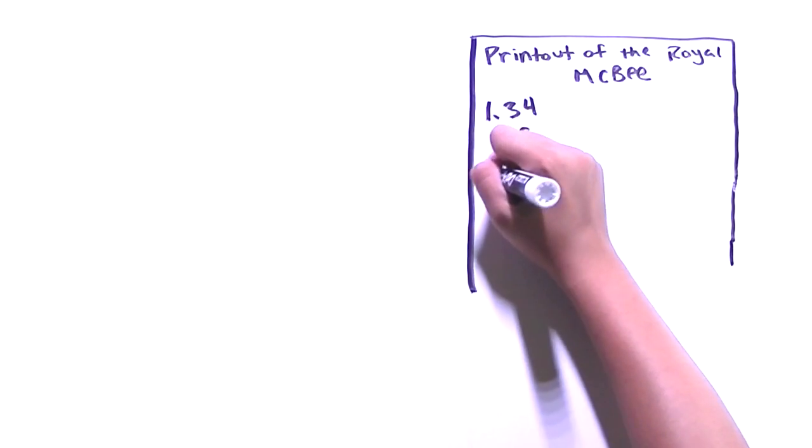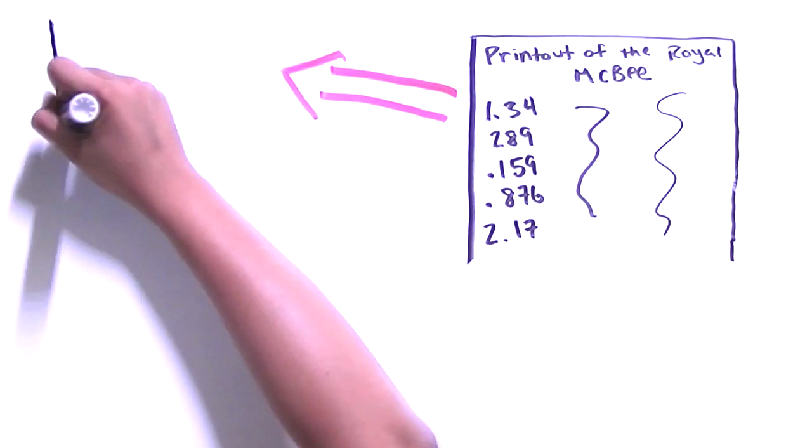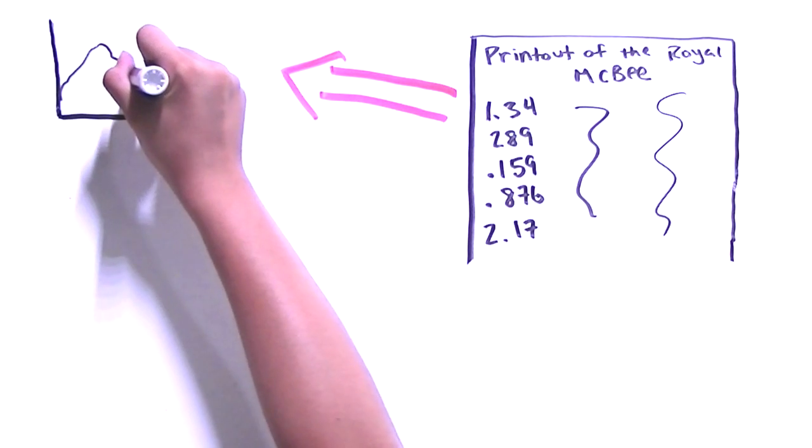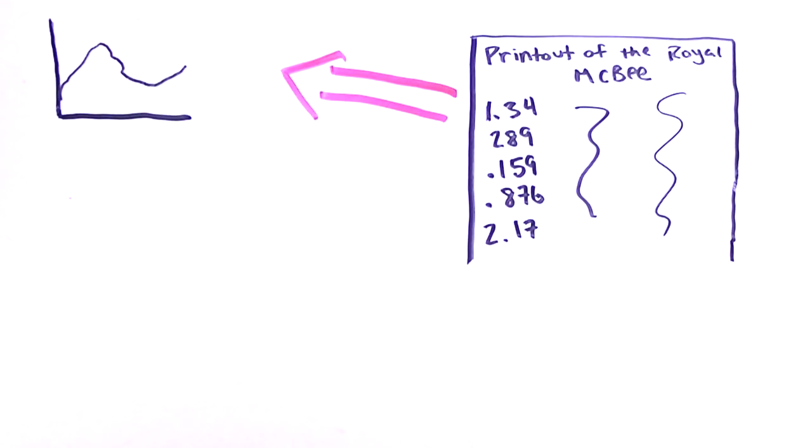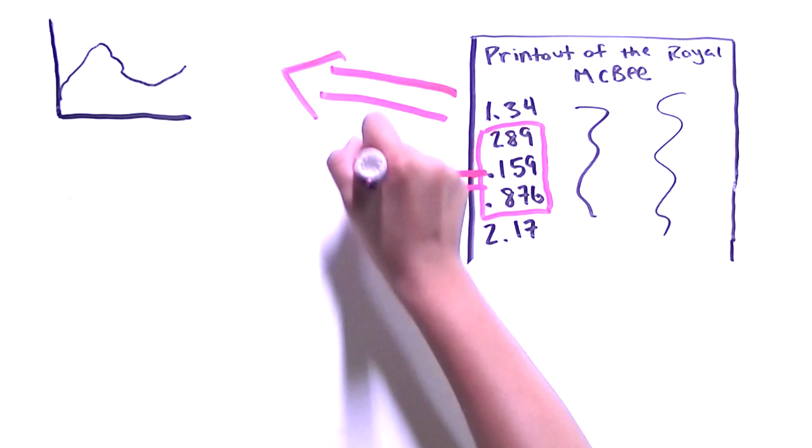From here, Lorenz converted the numbers into a graphical representation. He would follow one variable, like temperature or wind direction, and plot it on a graph. Patterns of temperature and wind occurred, but never in a perfectly predictable manner, just like in the real world.